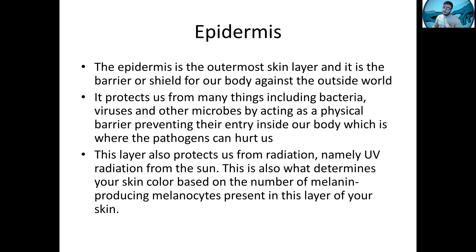This layer also protects us from radiation, namely UV radiation from the sun. It also determines your skin color based on the number of melanin-producing melanocytes present in this layer — the more you have, obviously, the more pigmentation you have in your skin. Melanin is meant to protect your skin against UV radiation. If you're exposed to a lot of UV, say you go sunbathing, you end up getting tan, a darker skin color, because the number of melanocytes increases due to higher demand. This is also why people from tropical areas that get a lot of sunlight tend to have darker pigmentation than people from snowy or northern regions where there's less need for UV protection.